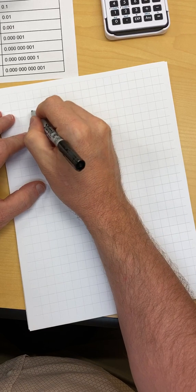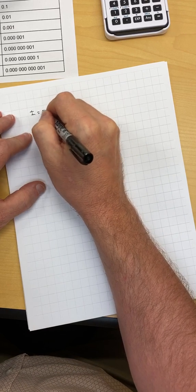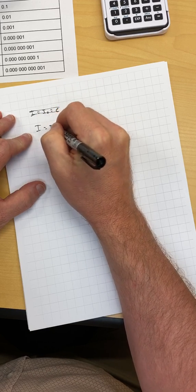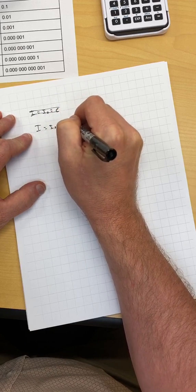So if we use the exponential attenuation equation, I over I naught equals I naught e to the minus mu x.